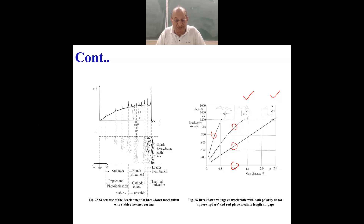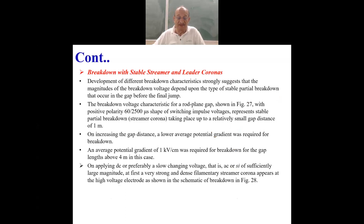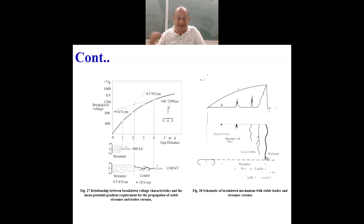We will learn further that there is also a very predominant effect when you measure the breakdown strength under any field condition with different kinds of voltages. This has been measured with positive and negative polarity DC. If you measure with AC it will be slightly different. If you measure with lightning impulse it will be different. If you measure with switching impulse it will be different. So you cannot say that the breakdown strength of air has a certain fixed value.